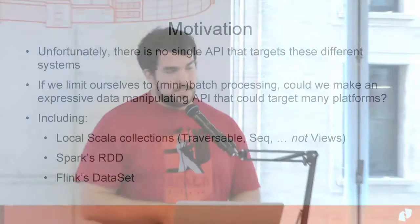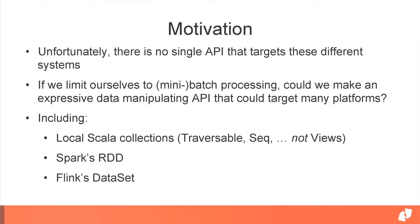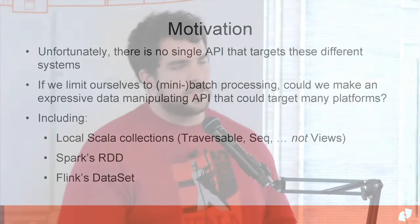Everybody's probably heard that these concepts for manipulating data work really well when you scale up. I found four different high-profile projects that use these sorts of concepts: Spark has its Resilient Distributed Datasets, Apache Flink has its DataSet concept, Summingbird and Scalding let you write functional code using these idioms that can work on Hadoop and Apache Storm. They've also inspired other library designs like the Akka Streams library, which implements the reactive streams interface. Unfortunately, there's not really a single API that targets all these different systems.